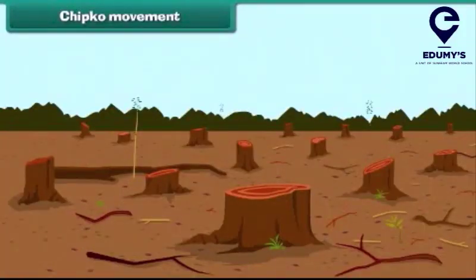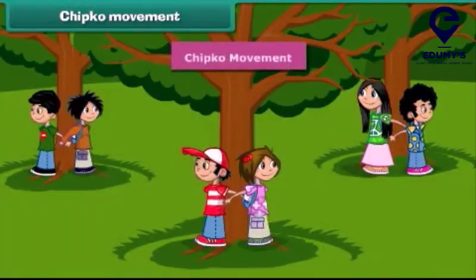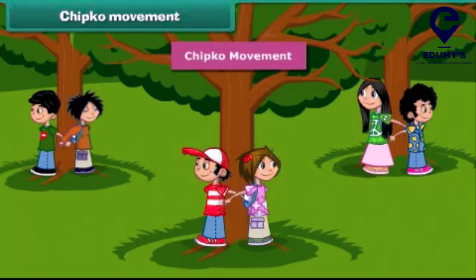Now we know about an event related to protection against the cutting of trees — the Chipko Movement, or Chipko Andolan, which literally means 'to stick' in Hindi. It is a social ecological movement through the act of hugging trees to protect them from being felled.